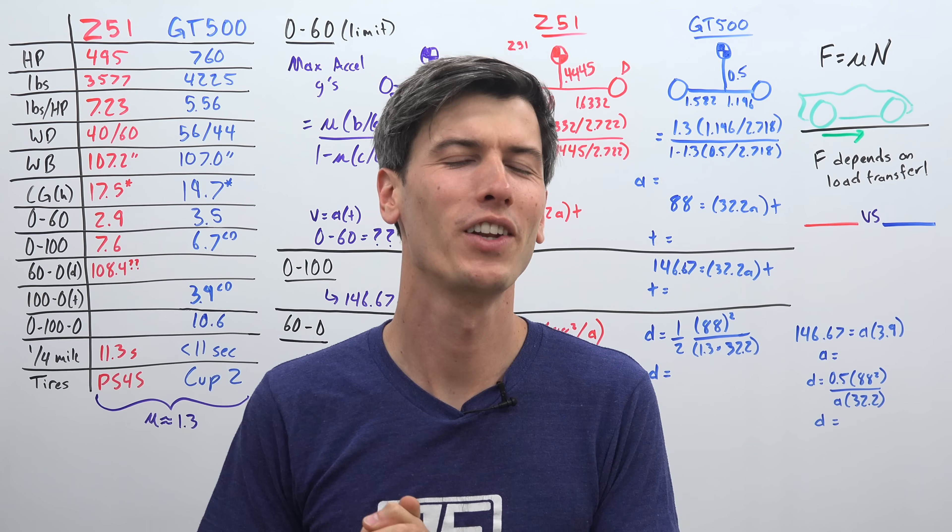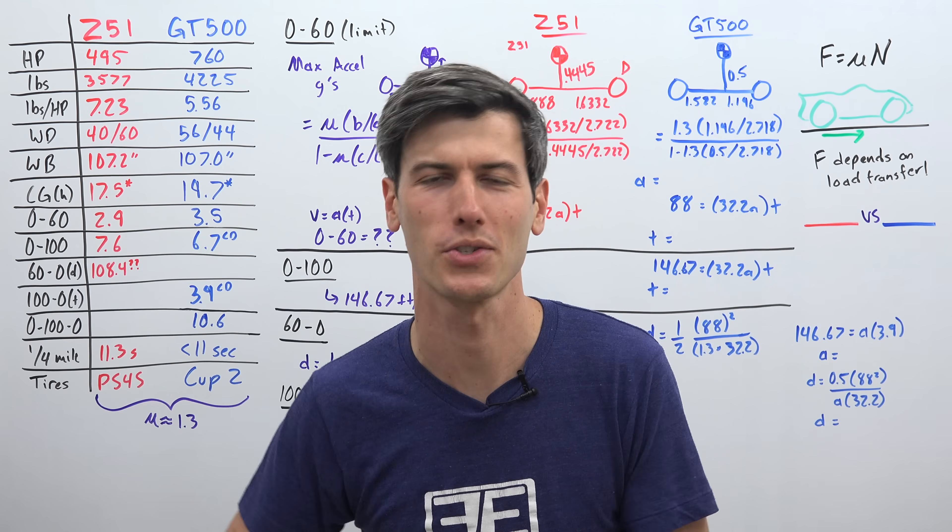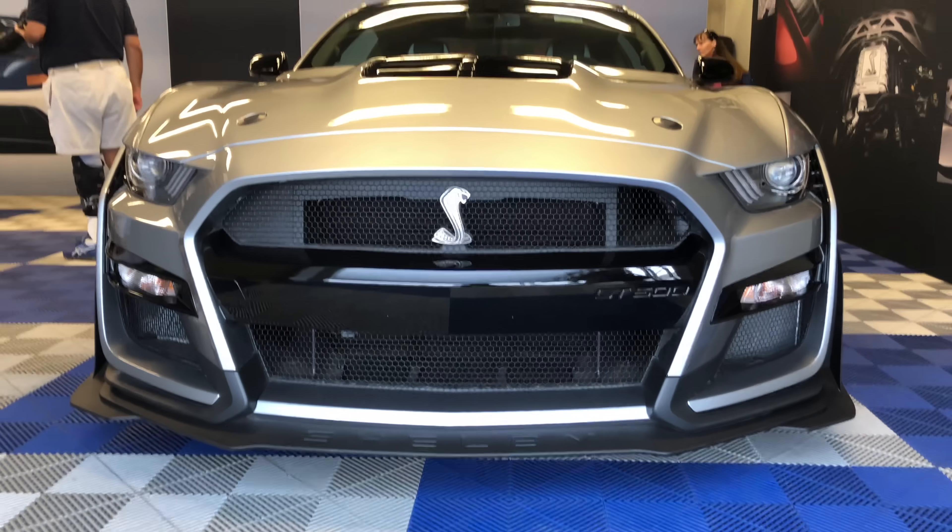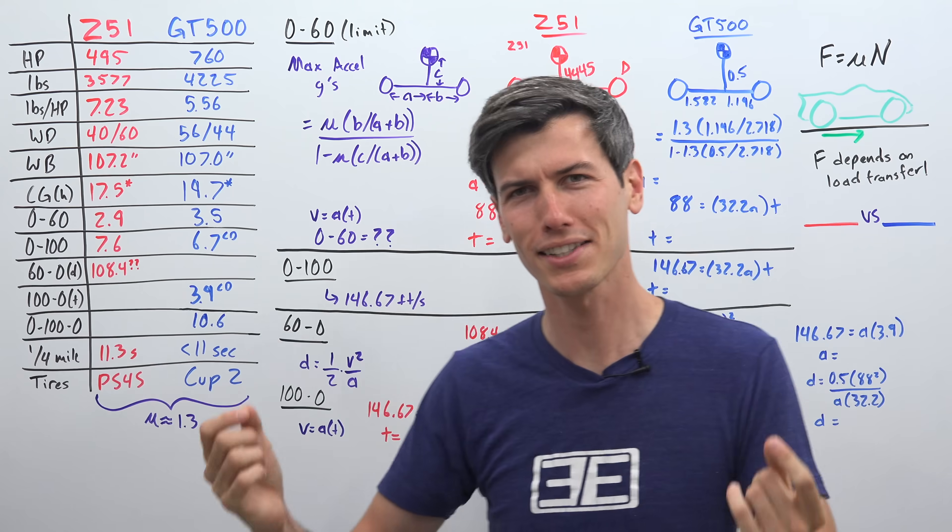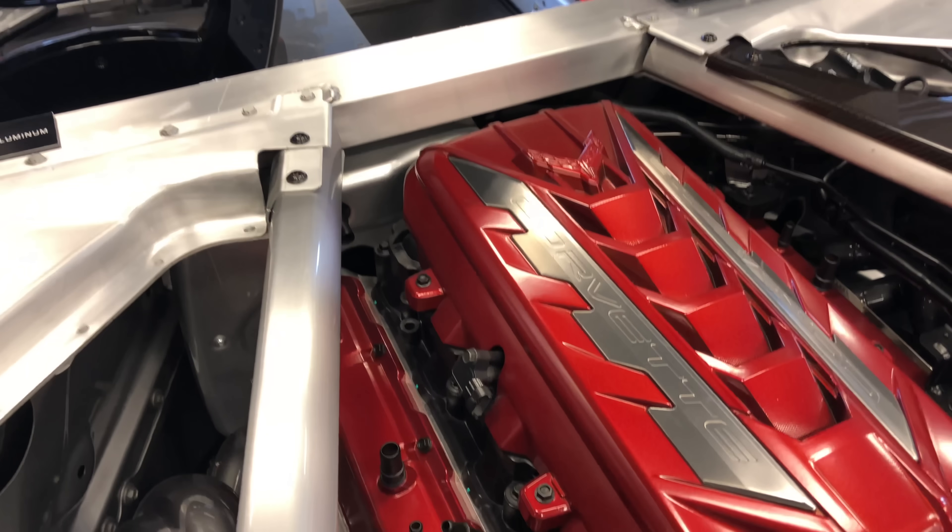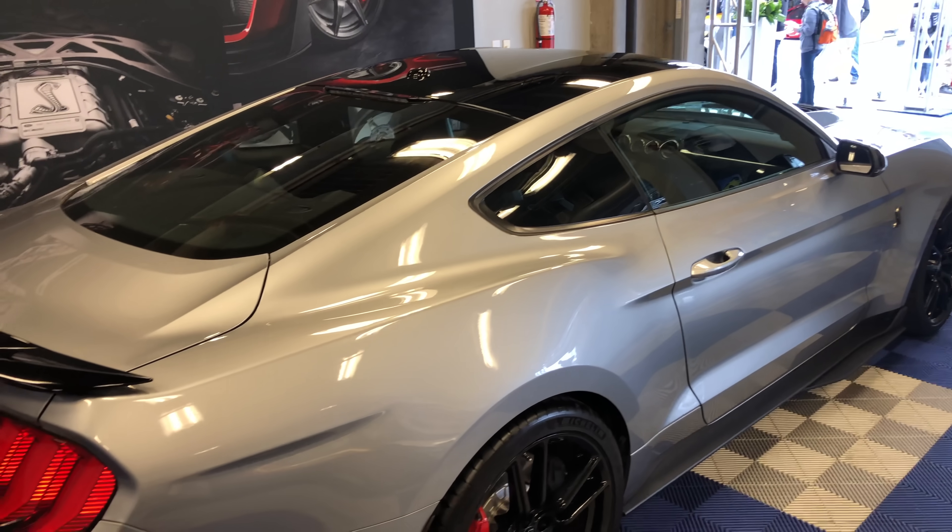Hello everyone and welcome. In this video we have a showdown between two incredible American sports cars, the new Corvette Z51 versus the Shelby GT500. And what we're going to be discussing is why the lower horsepower Corvette Z51 actually is faster to 60 miles per hour versus the GT500.